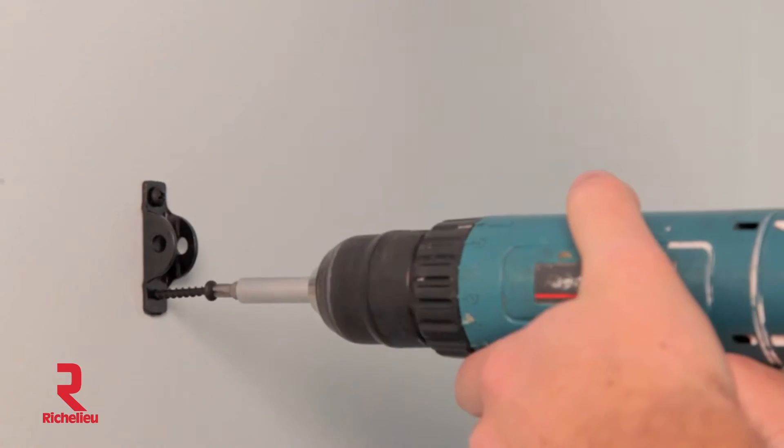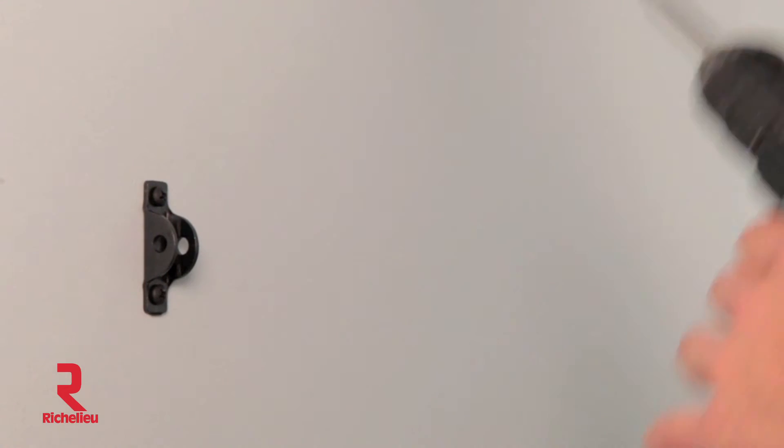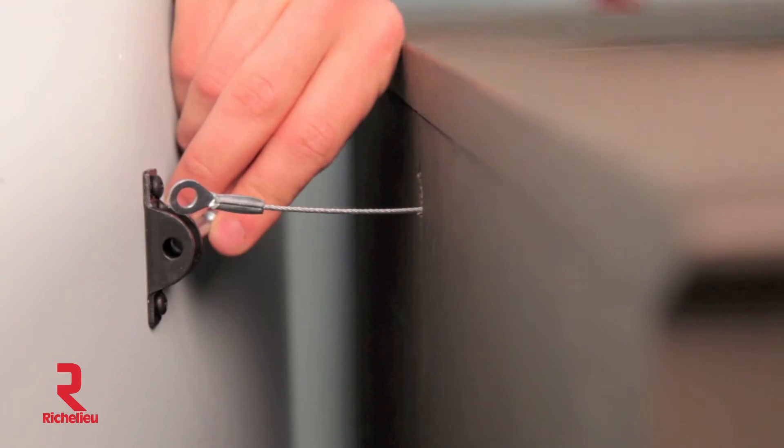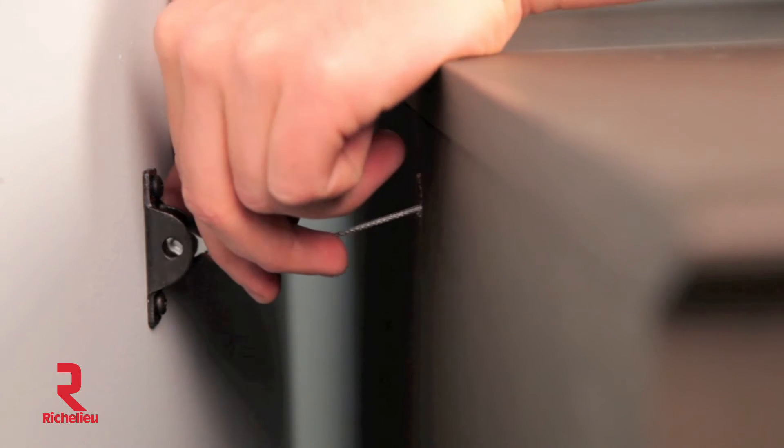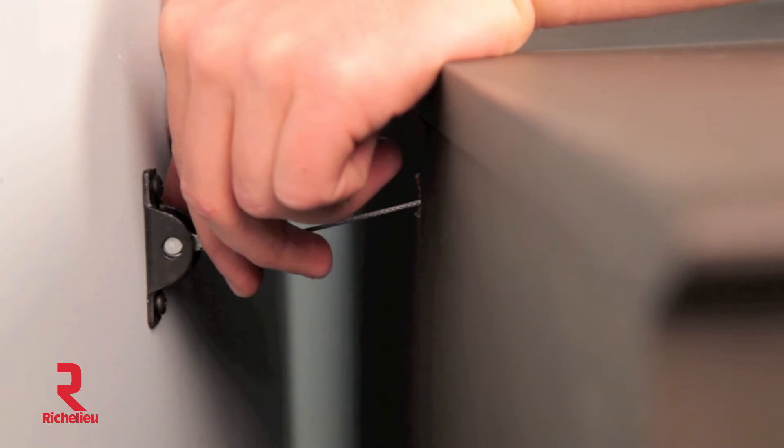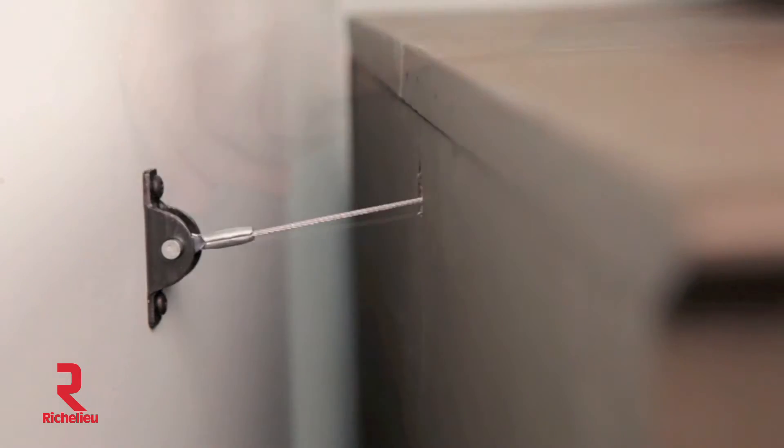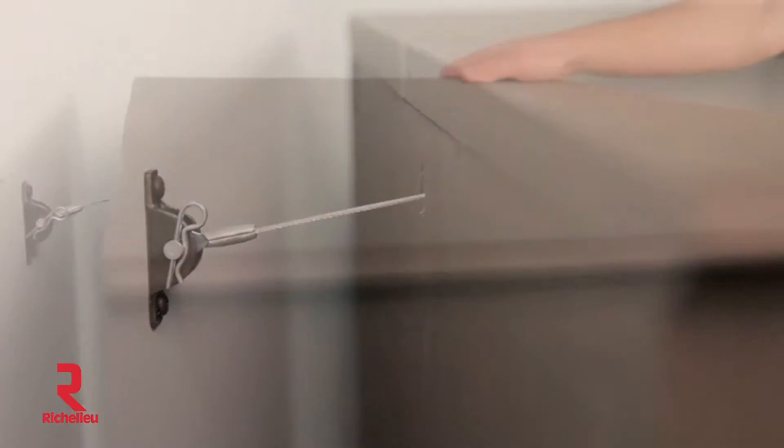Attach the second bracket to the wall using the self-drilling half inch stud screws. Insert rod through the bracket and eye of the cable. Using the clip, lock in place.